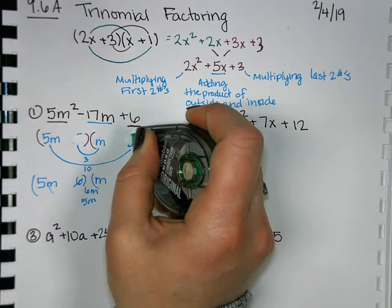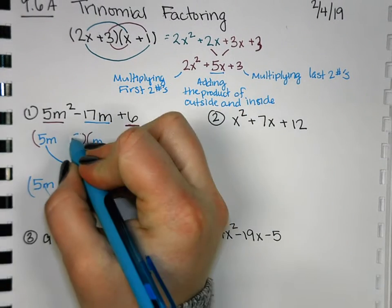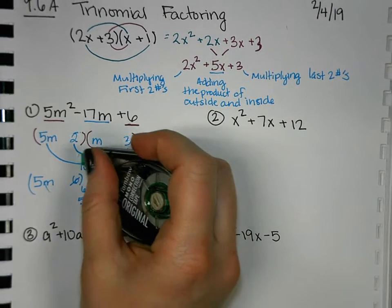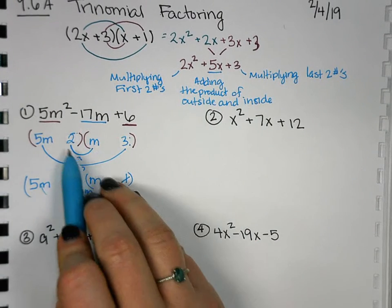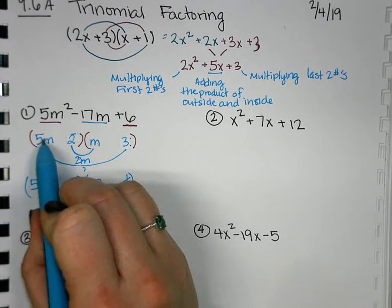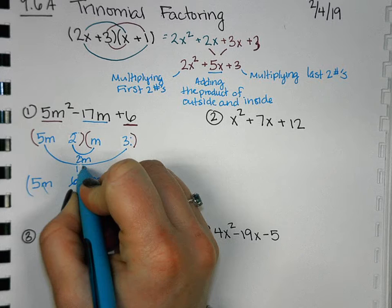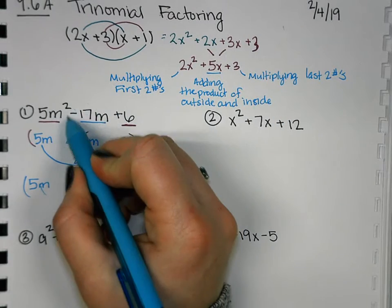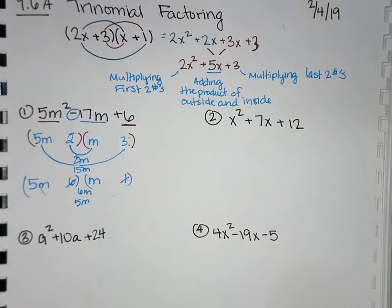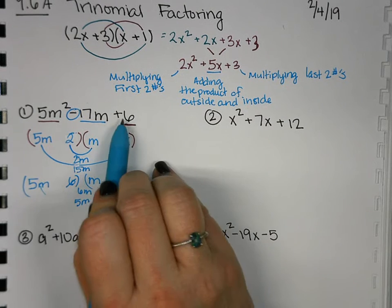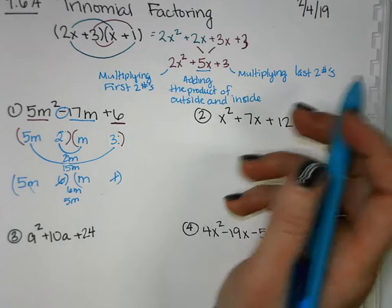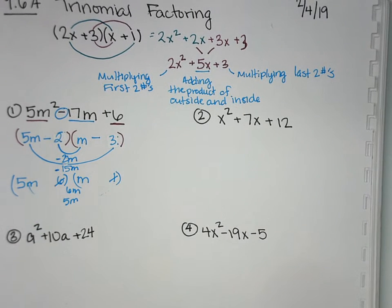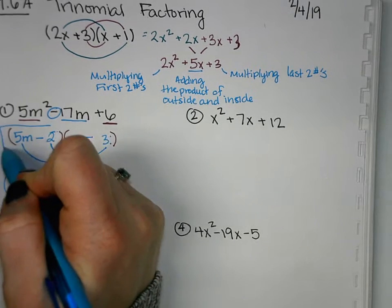What if I put the 2 here and the 3 here? They still multiply to 6, but we're just changing their location. What's 2 times m? 2m. 5m times 3? Does that add up to 17? Yeah. Now, how do we get negative 17? Because ours does need to be negative 17. But they still have to multiply to a positive. So how do we get things that are negative to multiply to a positive? Double negative. So let's make them both negative.